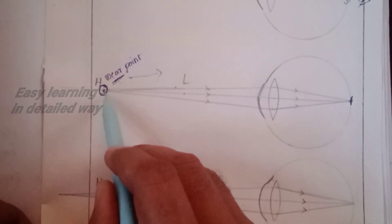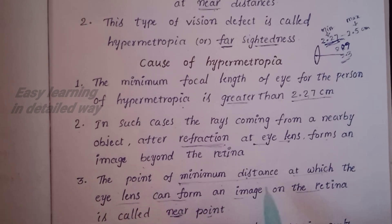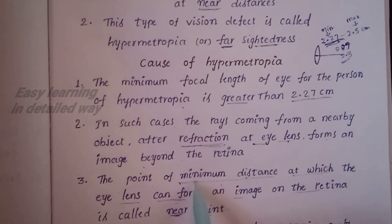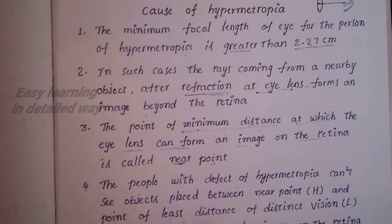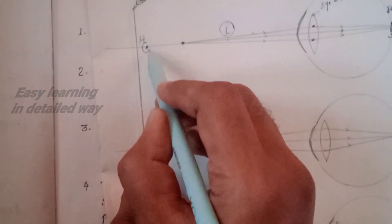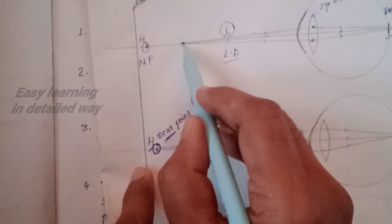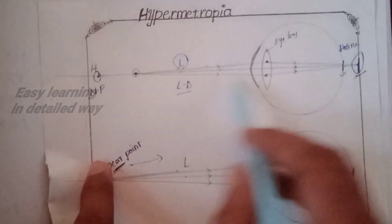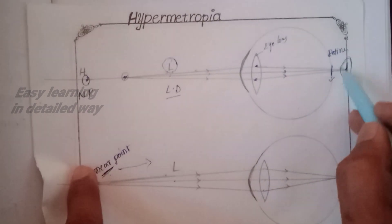The eye lens can form an image. People with the defect of hypermetrophia cannot see objects placed between the near point and the least distance of distinct vision. This is the near point and this is the least distance of distinct vision.